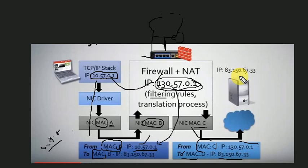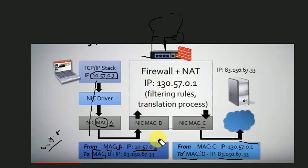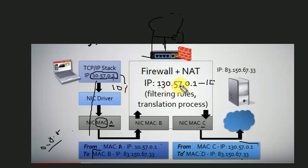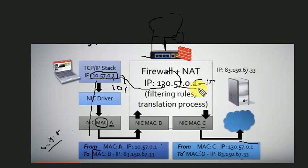In dynamic NAT, I create a pool of public IP addresses in the firewall. For example, I create a pool starting from 130.57.0.1. The firewall assigns IPs from this pool to internal systems dynamically.